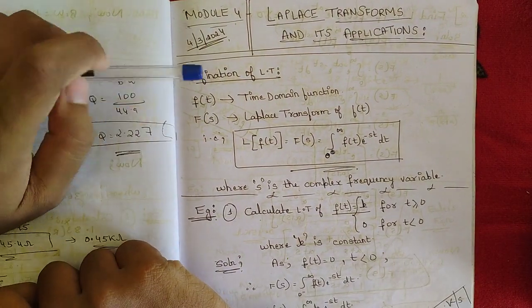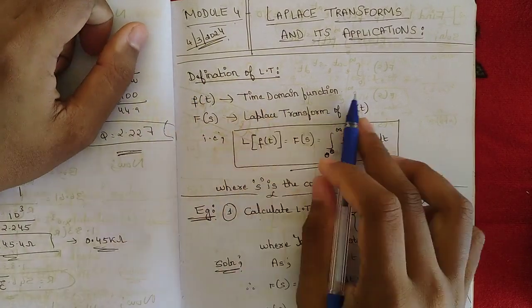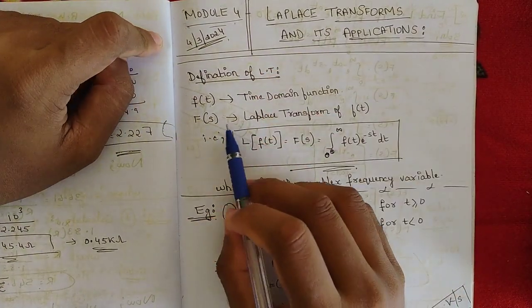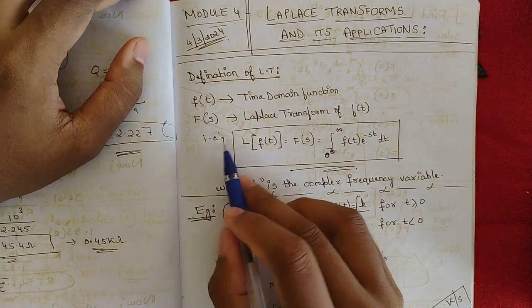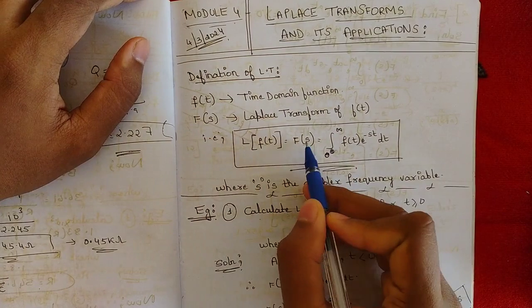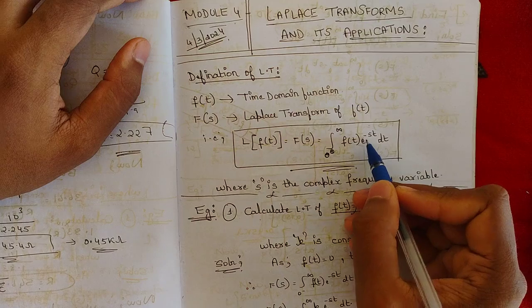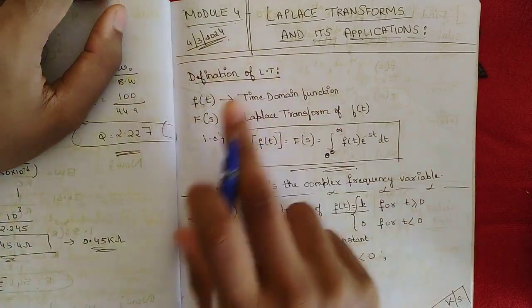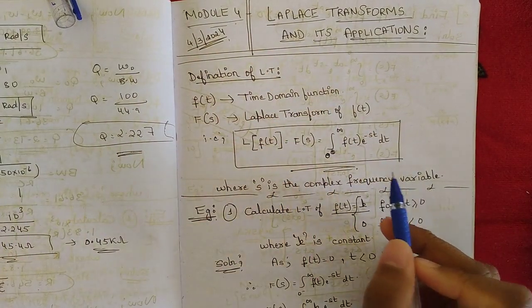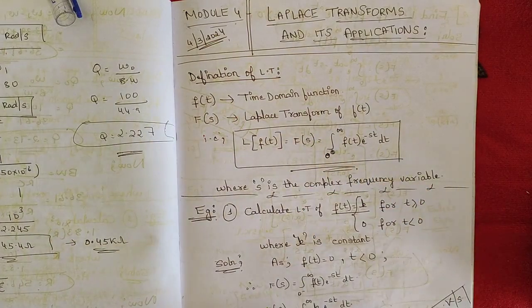First, let us see the definition of the Laplace Transform. Here f(t) is a time domain function, and F(s) is the Laplace transform of f(t), represented as F(s). So L{f(t)} = F(s), and it is defined as the integral from 0 to infinity of f(t) e^(−st) dt. This is the basic definition of the Laplace transform. Here s is called the complex frequency variable — when the function is converted from the time domain to the frequency domain.